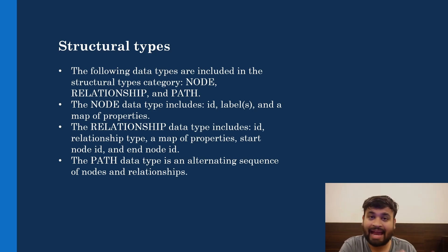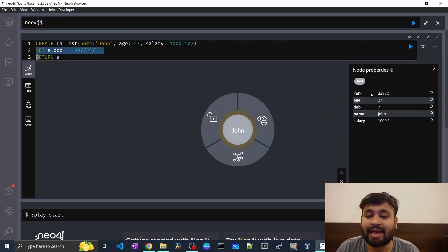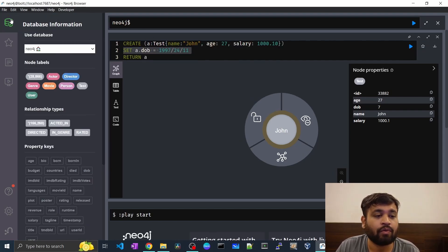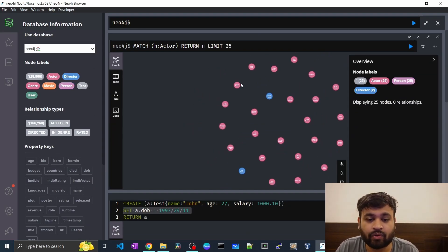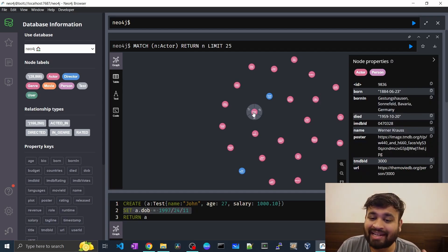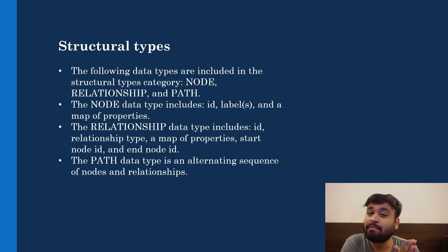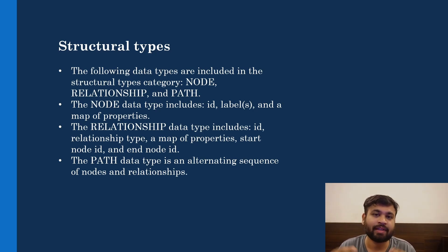The node data type includes the ID of the node, then the labels on the node (such as 'actor' or 'person'), and the ID which is a unique identifier for every node generated by Neo4j itself — you don't have to provide it. If you go into the graph and click on 'actor', you will see the unique identifier present for each node, accessible using the ID function. You can filter your nodes based on different IDs, and then there is the map of properties — key-value pairs.